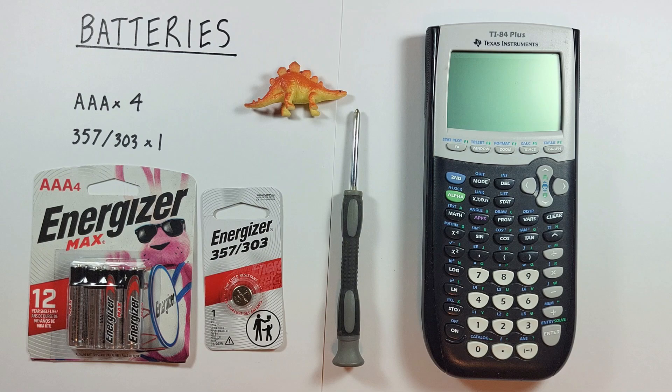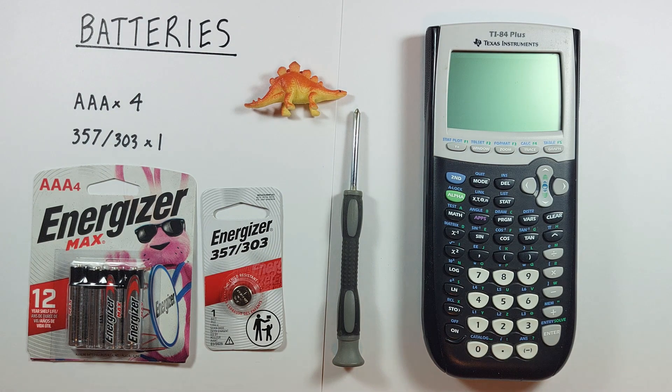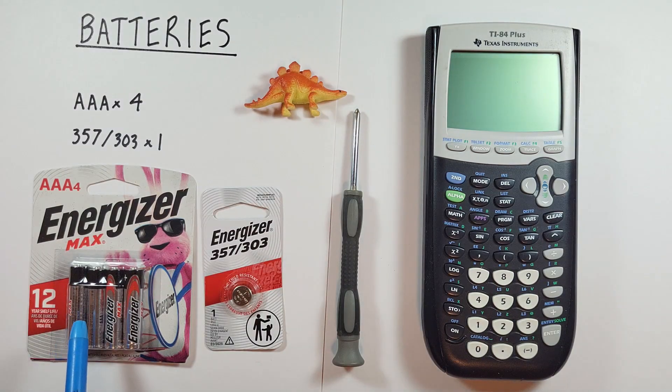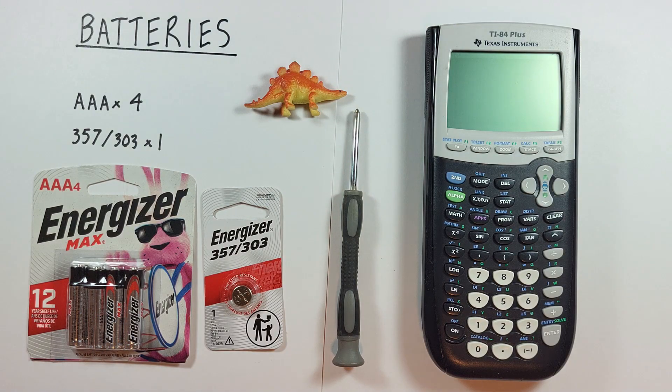Both of these batteries should be easy to find. I got both the AAA and round batteries at my local Walmart. Typically it's a good idea to replace both at the same time though if you're in a pinch the AAAs usually run out first so you can just replace those if you need to.